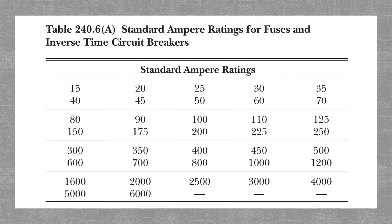Here is Table 240.6A — standard ampere ratings for fuses and inverse time circuit breakers. This table is very straightforward with no figuring or cross-referencing required; it's simply a listing from smallest to largest of standard ampere ratings. Going back to our earlier example: if we calculated needing 22 amps of overcurrent protection, we'd look at this table and see that 22 amps is not a standard ampere rating. So we would either go down to 20 amps or up to 25 amps depending on circuit type. The table goes from 15, 20, 25, 30, all the way up to 4,000, 5,000, and 6,000.